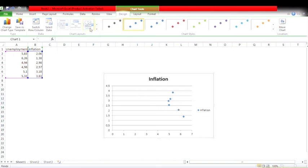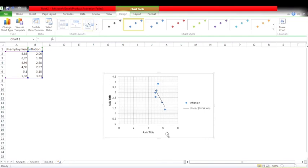Choose another layout to see the slope. Revise the title of X and Y axis with unemployment rate and inflation rate.